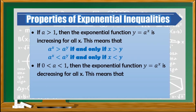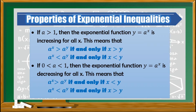And if the value of a is between 0 and 1, then the exponential function y equals a raised to x is decreasing for all values of x. This means that if a raised to x is greater than a raised to y, if and only if x is less than y. And if a raised to x is less than a raised to y, if and only if x is greater than y. In summary, if the base is greater than 1, we simply follow the sign provided. Whereas if the value of a is between 0 and 1, we need to interchange the given inequality.